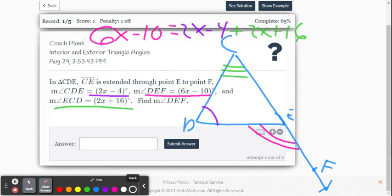So let's combine like terms on the right side now. So 2x and 2x is going to get us 4x. Negative 4 and 16 is 12. So we have 4x plus 12 on the right side. The left is still 6x minus 10.